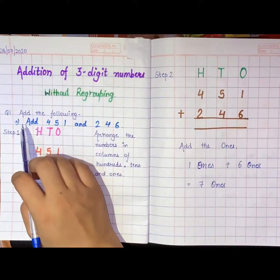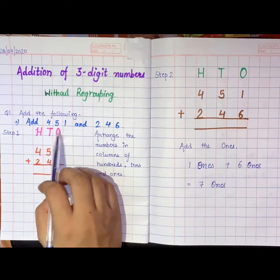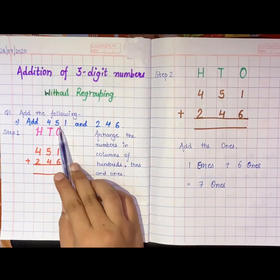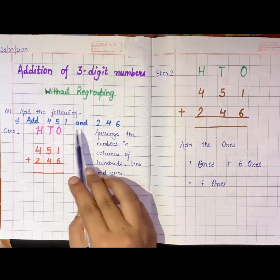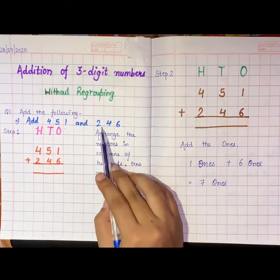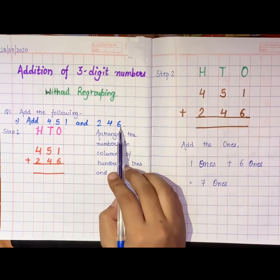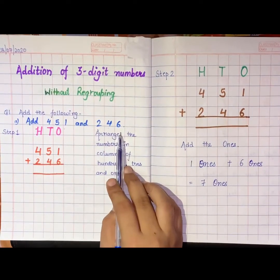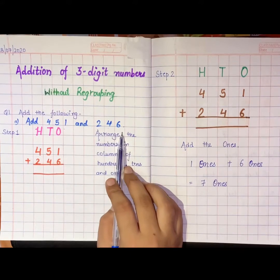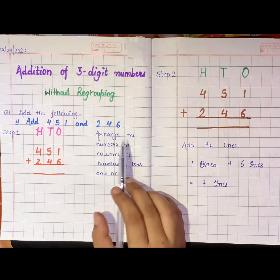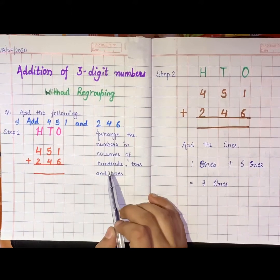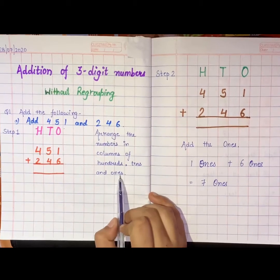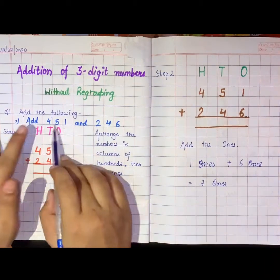Let us take one question: add the following. We have to add 451 and 246. I have taken these two numbers. My first step will be to arrange the numbers in columns of hundreds, tens, and ones.